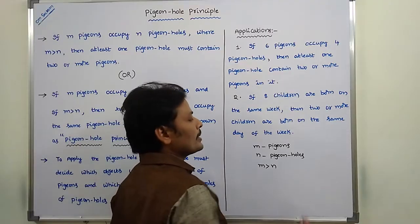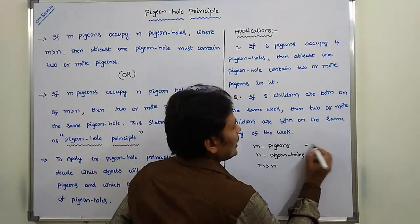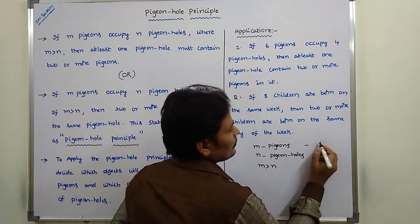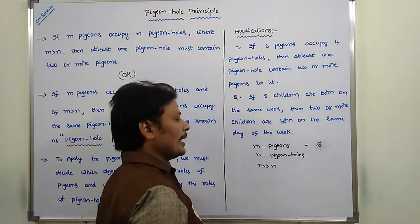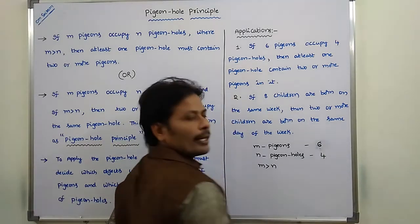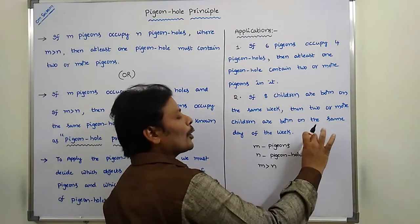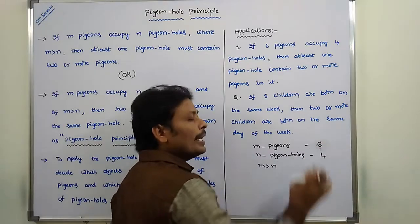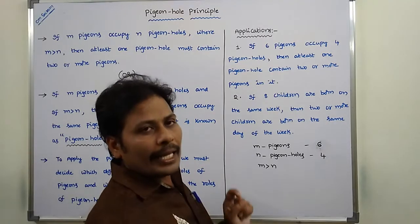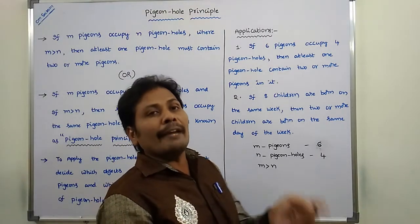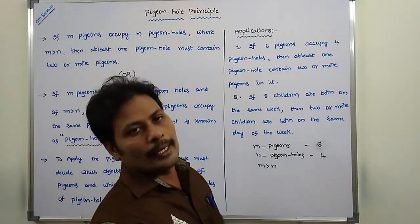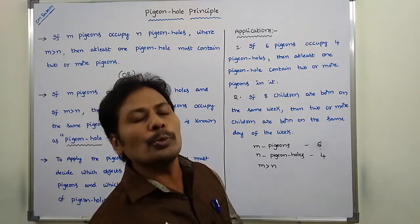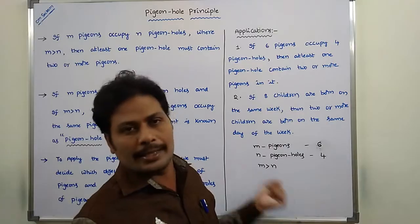One application is: suppose there are six pigeons and four pigeon holes. Four pigeons can be allotted to four pigeon holes. The remaining two pigeons can be allotted to any one of the four pigeon holes. So we can say that one pigeon hole contains two or more pigeons.